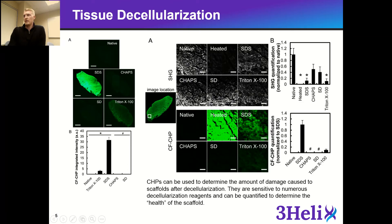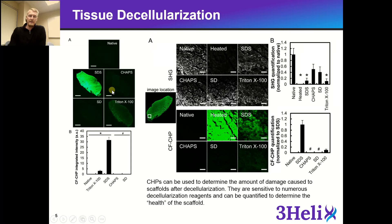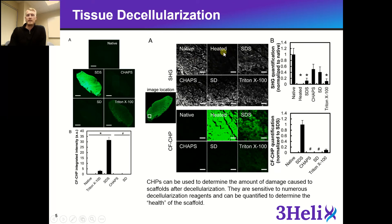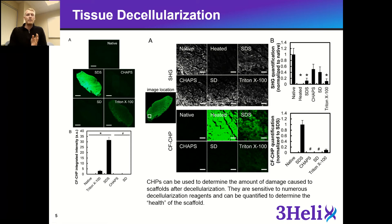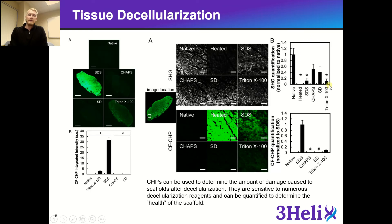We also looked at second harmonic generation, and again we compared the four detergents, but we also included a heated control sample. In second harmonic generation, you get a nice signal intensity with structured collagen, but as soon as something becomes unstructured, you lose that signal intensity — and the inverse is true for CHP signaling. With the heated section, which has completely heat-denatured the collagen triple helix, we have a high CHP signal, and we still see damage from SDS detergent.